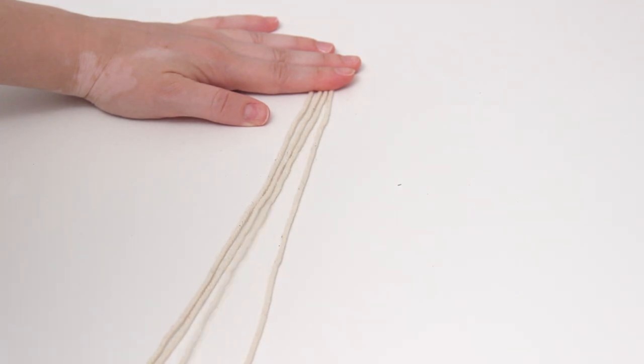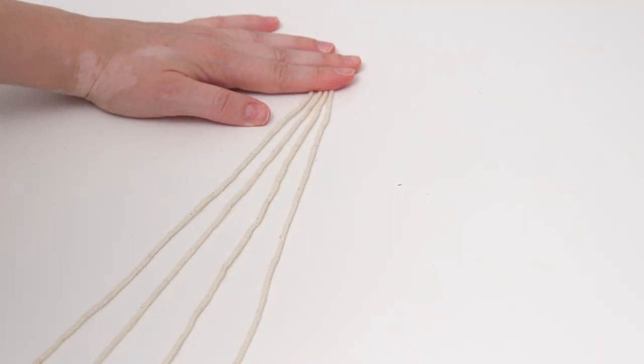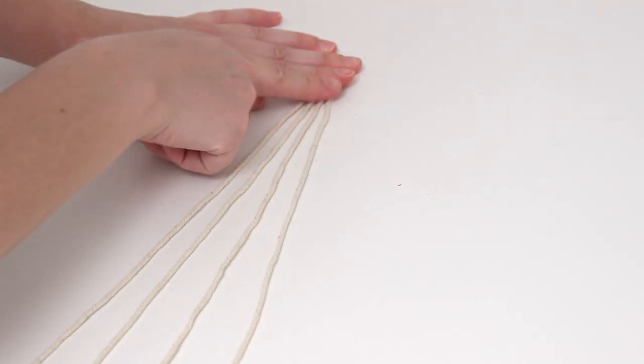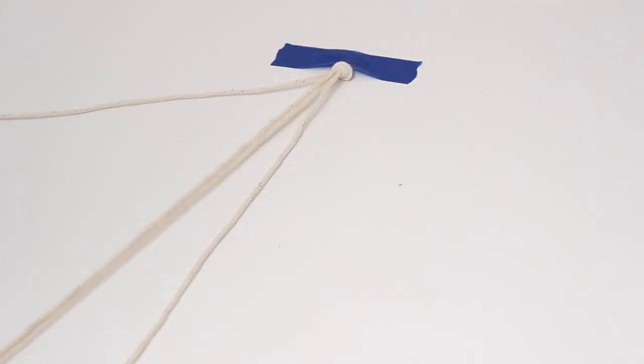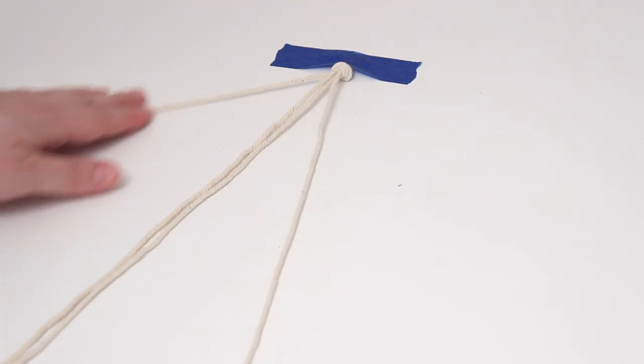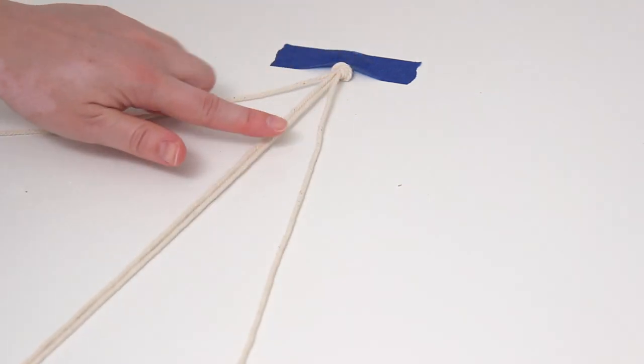So I cut out four pieces of macrame cord that were each 10 feet long. And then I tied a knot at the top and I taped them down to my table. Then we're going to do a square knot. So you're going to take the two pieces in the middle and just leave them alone.